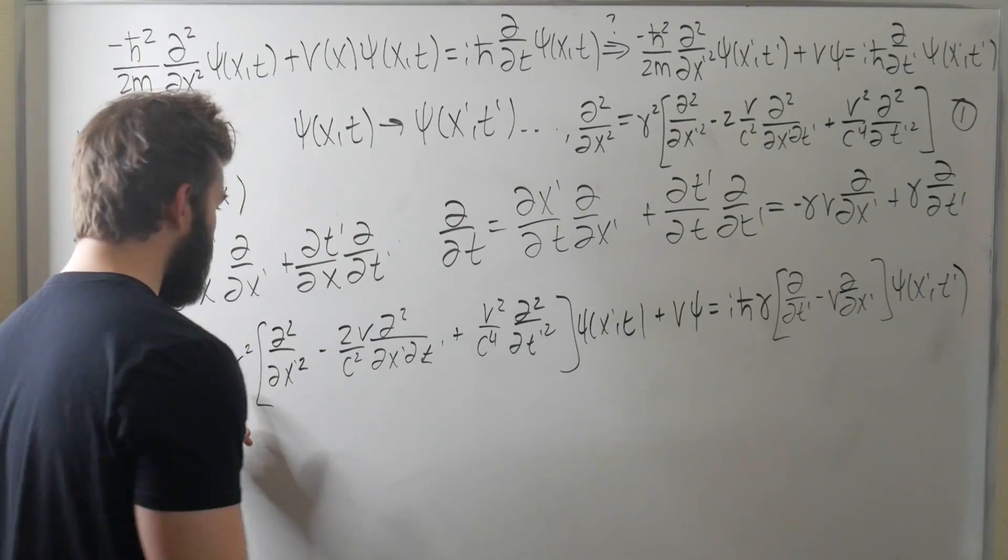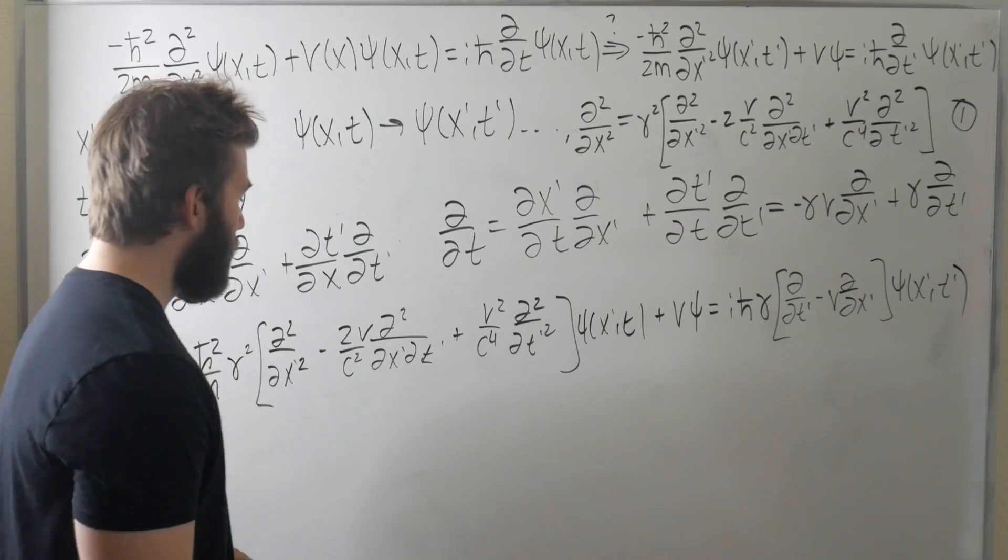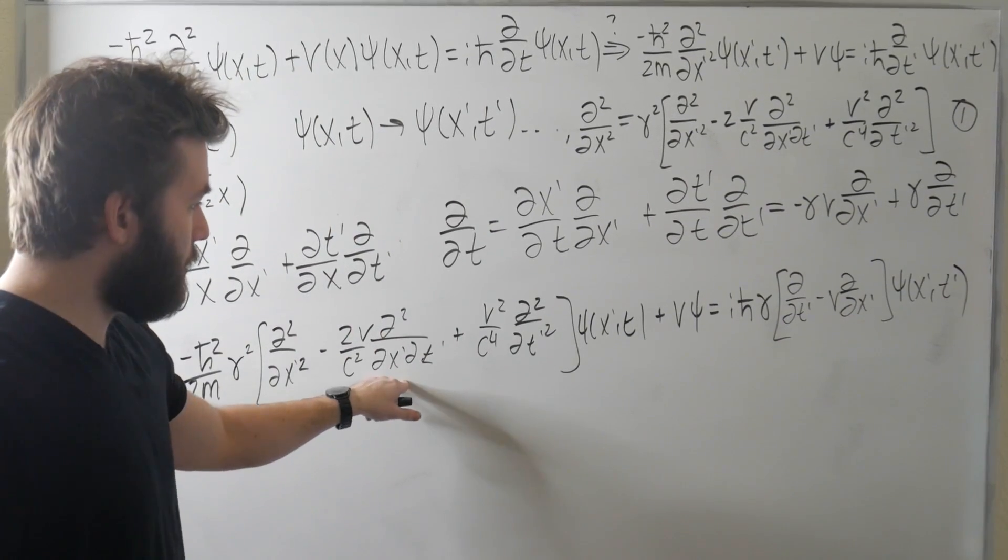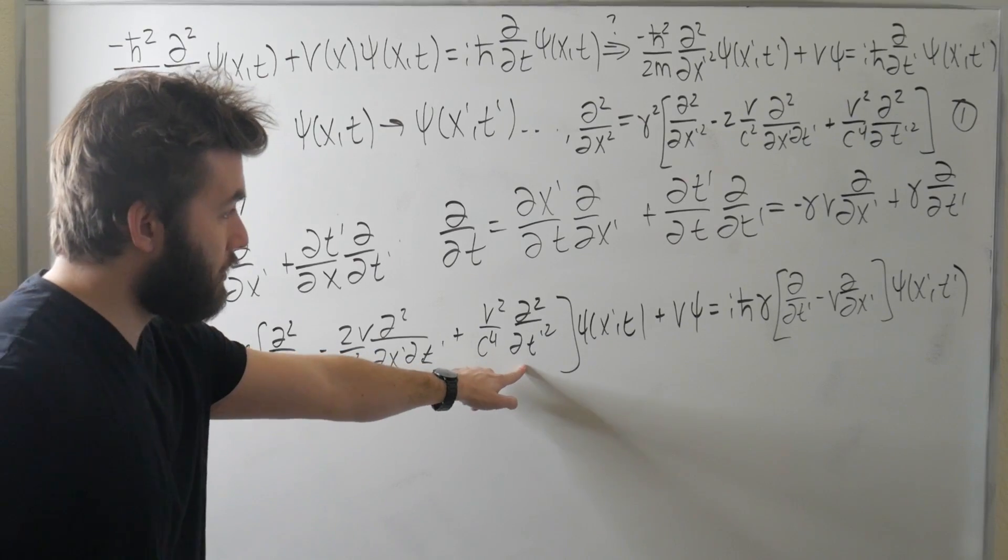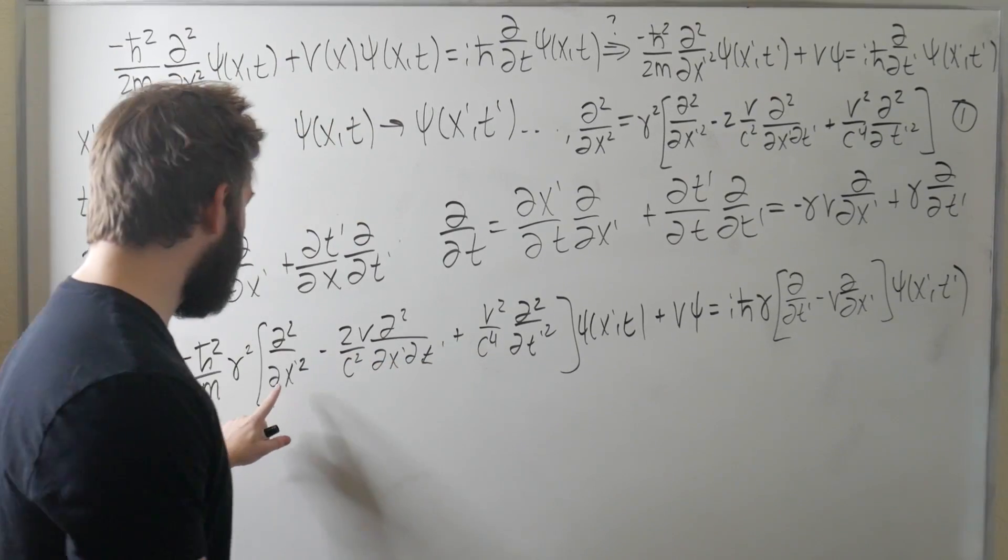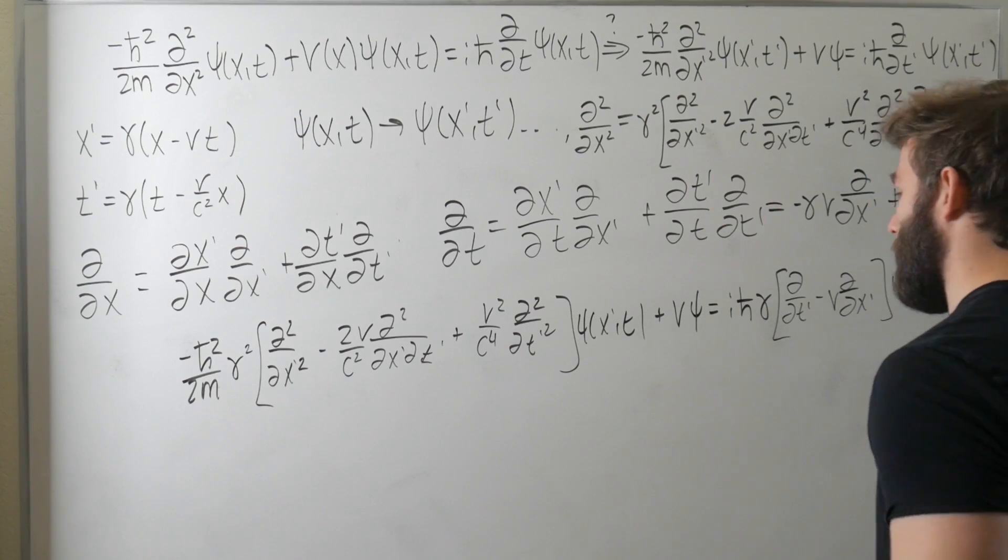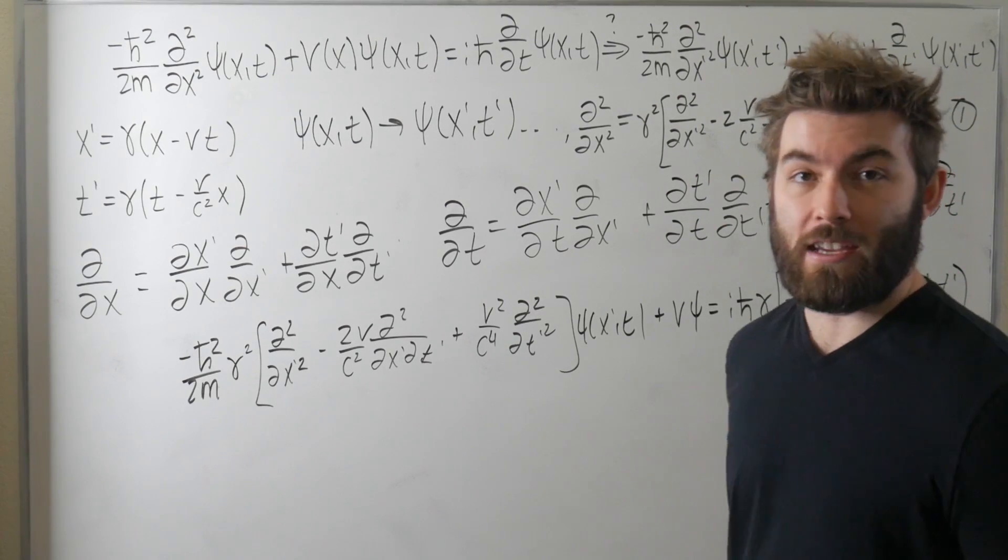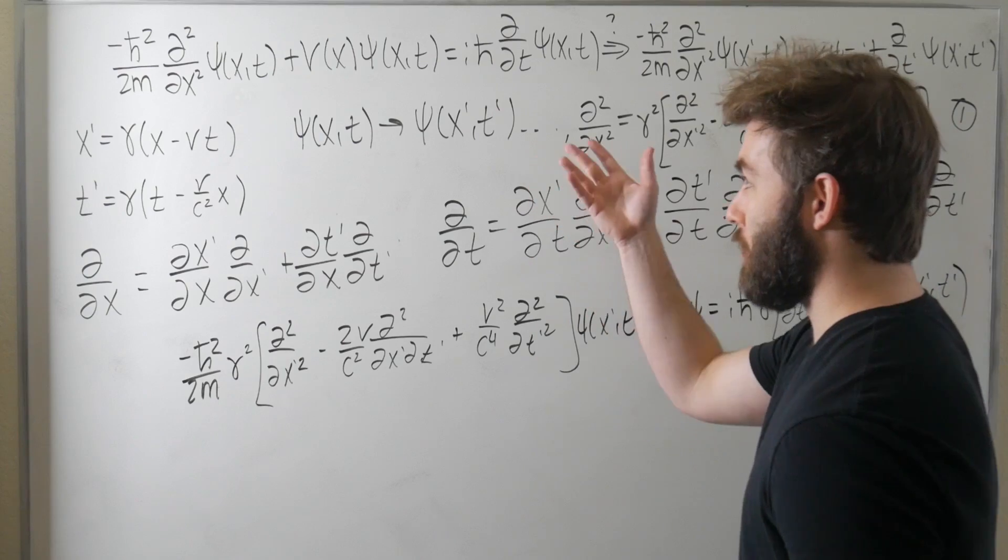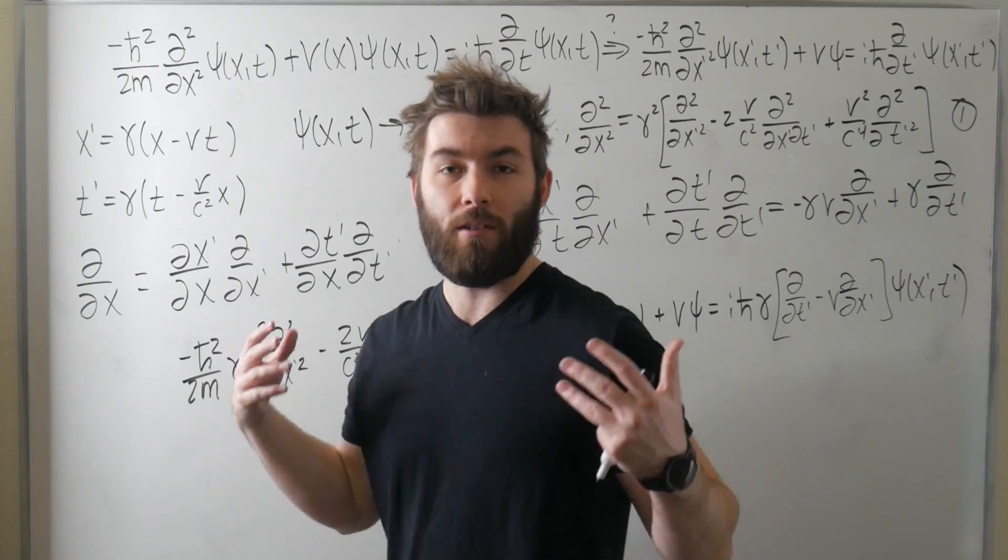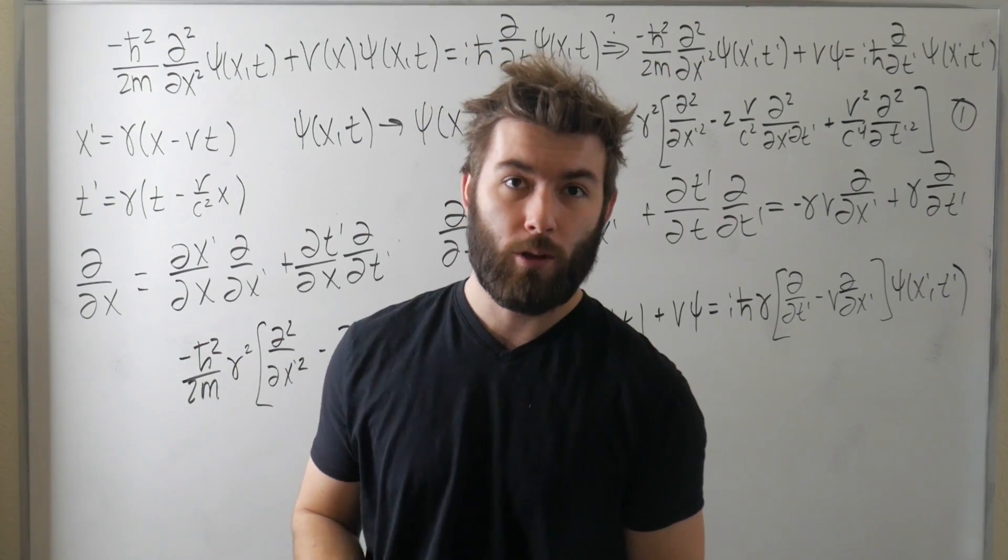There's really nothing we can do here. We can cancel one factor of gamma, but there's no way of getting rid of this mixed term. There's no way of getting rid of this second derivative. We have our second order spatial and our first order time, which is good, but we also have that first order space. It's just, it's not working out. This is foolproof that the Schrödinger equation is just not a relativistic quantum mechanical equation.